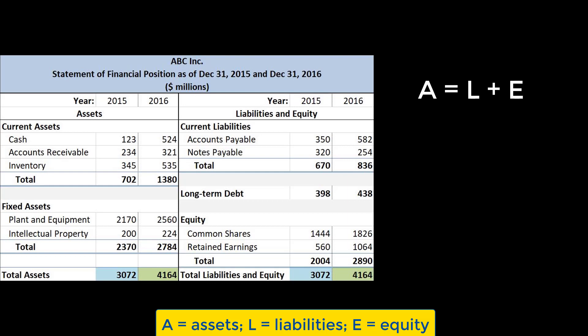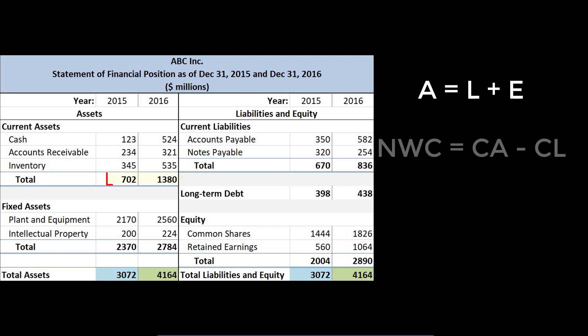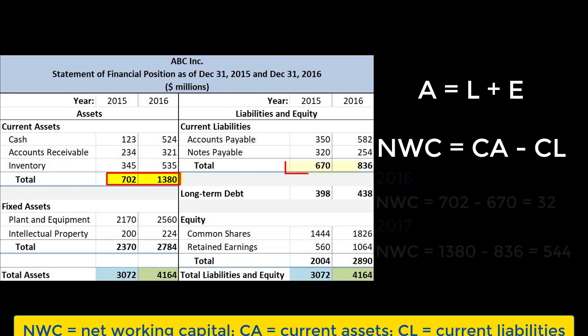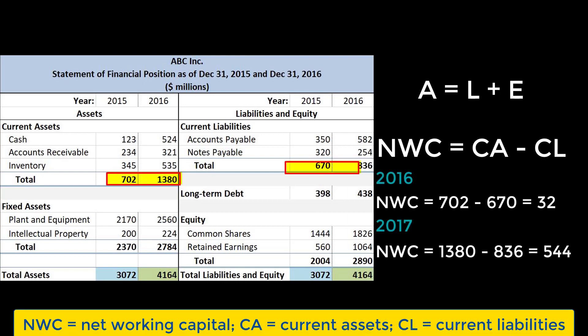A quick indicator of a firm's ability to generate money in the short term is its Net Working Capital, or NWC, which is given by current assets minus current liabilities. A positive Net Working Capital is good — it means the company has more cash than it needs to cover all its liabilities for the next 12 months.